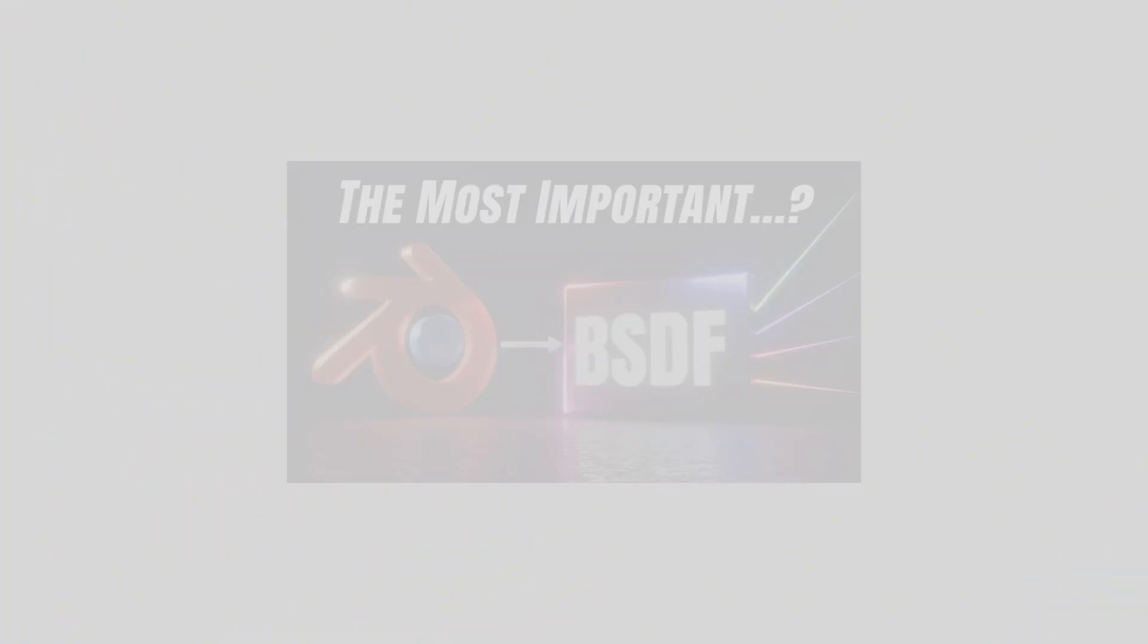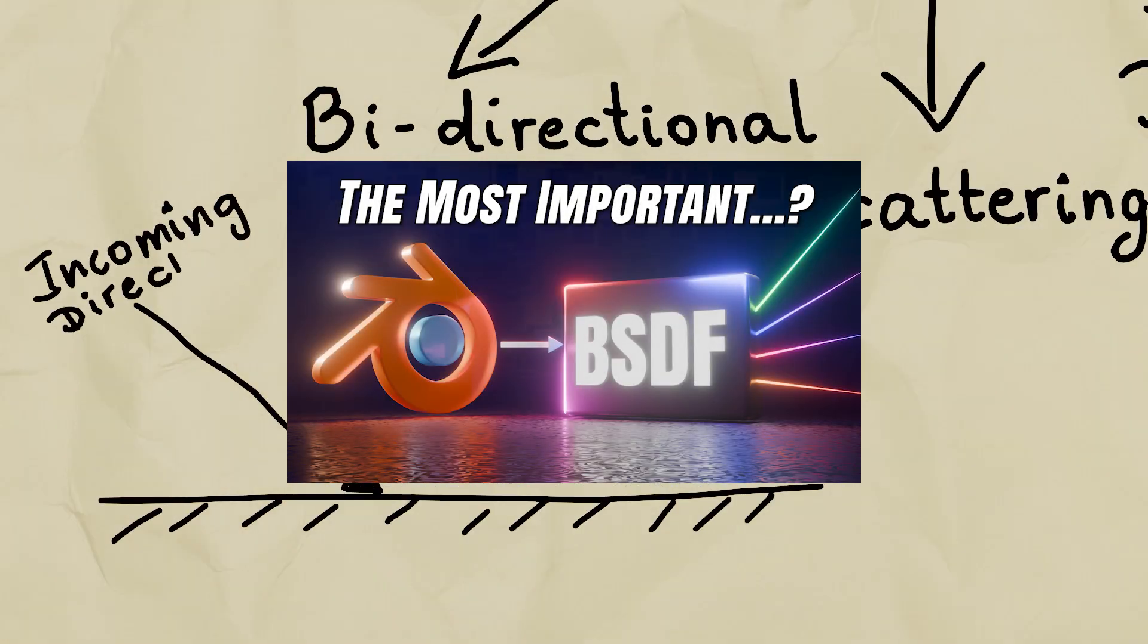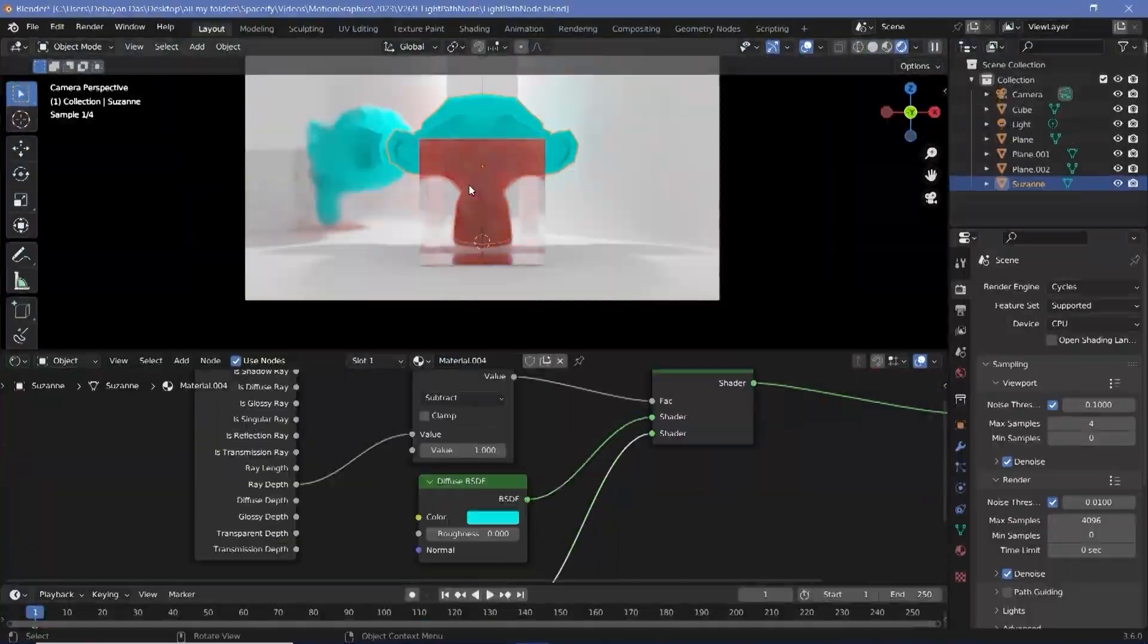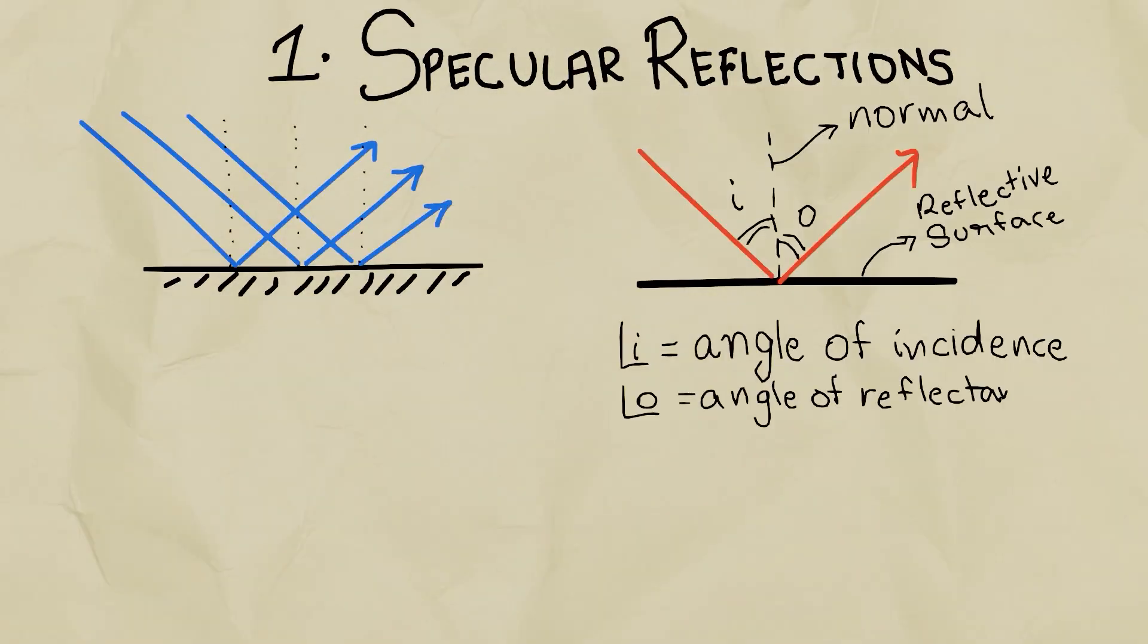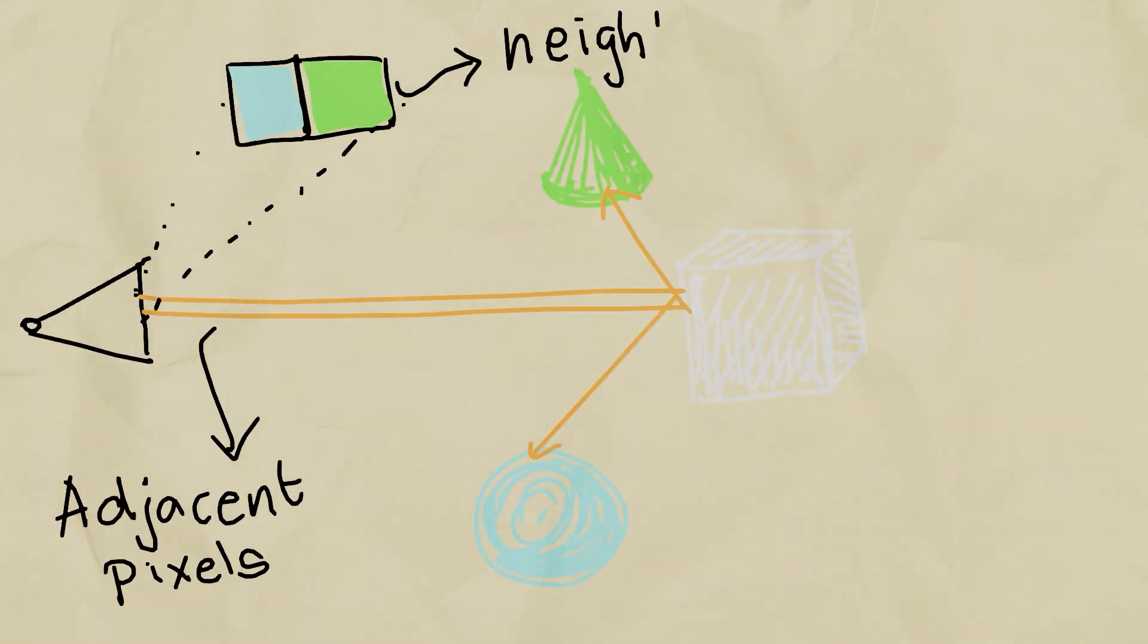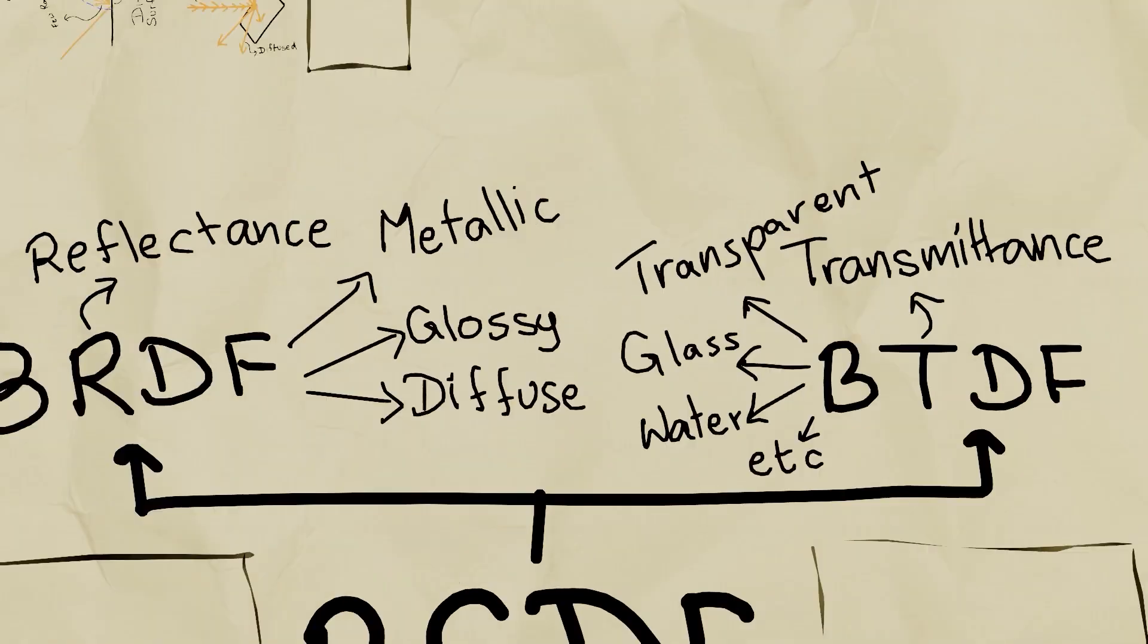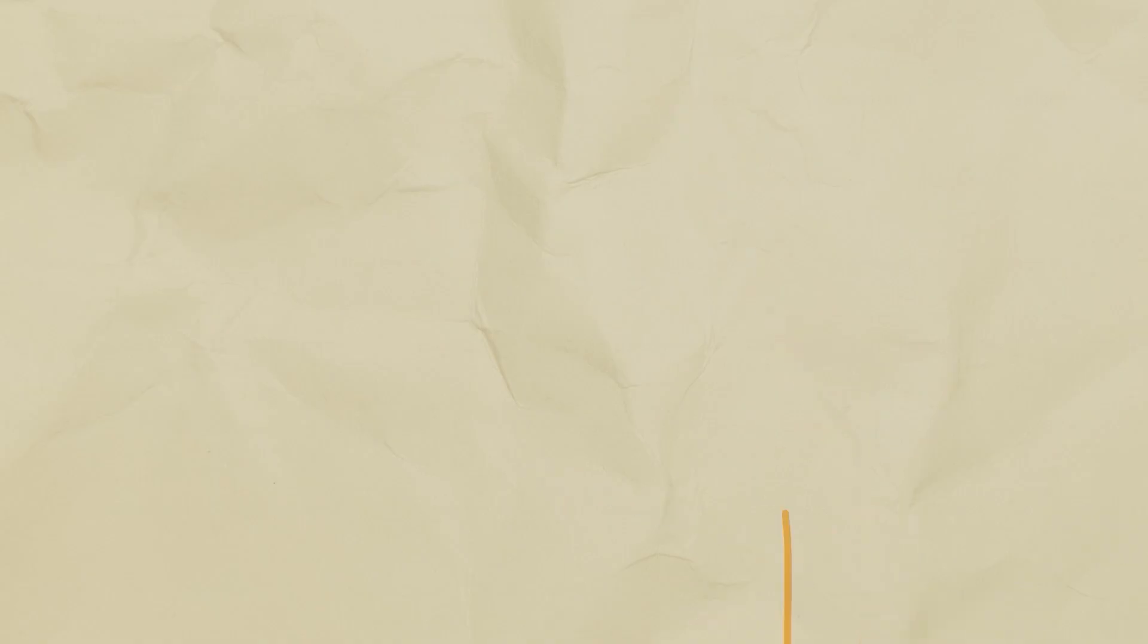In this video, we explored the BSDF algorithm, which determines how light travels based on the surface. Check it out if you haven't already. But without the Monte Carlo sampling, the BSDF simply would be unable to generate realistic results, no matter how many samples are calculated.